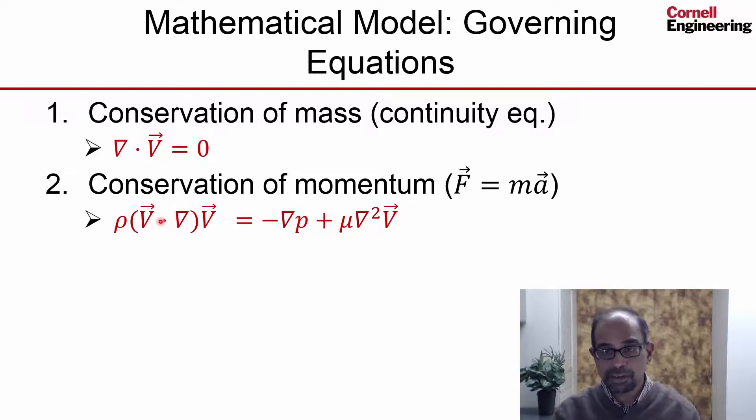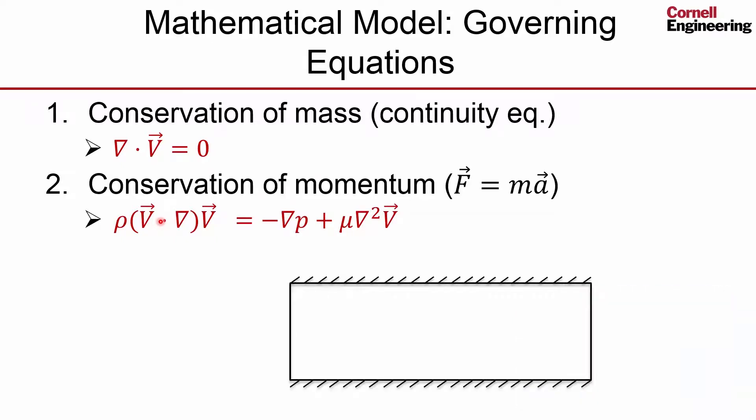The governing equations are defined in a domain that's shown over here. You have the top wall, the bottom wall, this is the entrance to the channel, and that's the exit. We will use a Cartesian coordinate system, x and y as indicated here, and decompose the velocity into components in the x and y directions. So we have two components of the velocity and then we have pressure. The unknowns are the two components of velocity and pressure, and all of these are functions of x as well as y. So we have three unknown functions and we have three equations: one from conservation of mass and two from conservation of momentum, one each in the x direction and y direction.